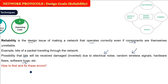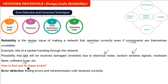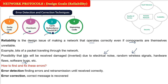There are two things to know: error detection and error correction. Error detection and correction techniques include parity codes, the checksum technique, the Cyclic Redundancy Code (CRC), and the Hamming code.